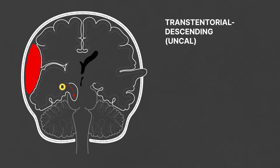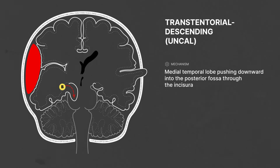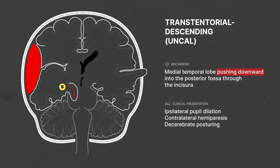Transtentorial descending herniations, also known as uncal herniations, are the most common type, caused by the medial temporal lobe pushing downward into the posterior fossa through the incisura, leading to ipsilateral pupil dilation, contralateral hemiparesis, and decerebrate posturing.